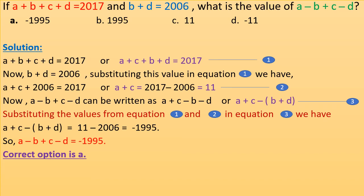Substituting B + D = 2006 into equation 1: A + C + 2006 = 2017, so A + C = 11. This is equation 2. Now A − B + C − D can be written as (A + C) − (B + D). Substituting: 11 − 2006 = −1995. So A − B + C − D = −1995. Correct option is A.